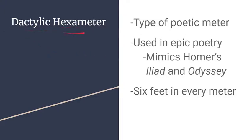Dactylic hexameter is a type of poetic meter typically used in epic poetry. It's what the Aeneid is written in, and it's also what Homer's Iliad and Odyssey were written in. This wasn't a coincidence — it was deliberate on Virgil's part, because the Aeneid is Roman propaganda and Rome looked up to ancient Greece. By calling back to these well-known and beloved tales and spinning them from the Roman perspective, Virgil is already drawing in his audience.